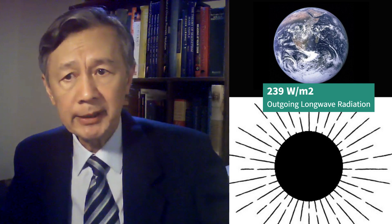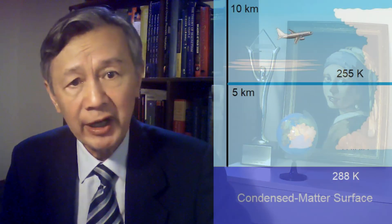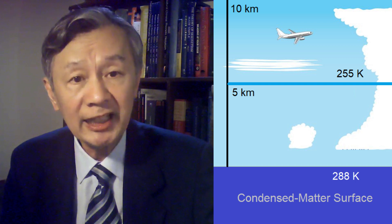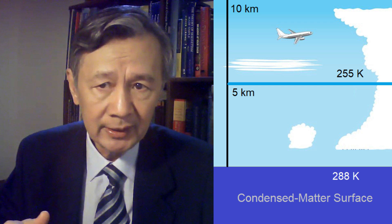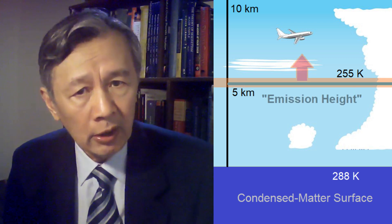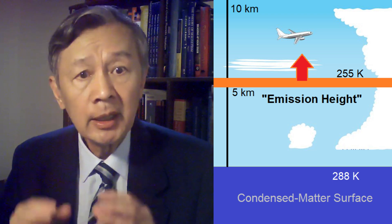with average intensity close to 239 Watt per meter square. Treating Earth as a black body, the emission temperature is just 255 Kelvin, which is much lower than the global mean surface temperature today. It is just an estimation. Notice the 255 Kelvin happens to be the atmospheric temperature around 5 km above the surface. That's why the term emission height or emission altitude has been introduced.